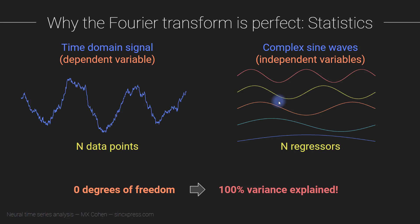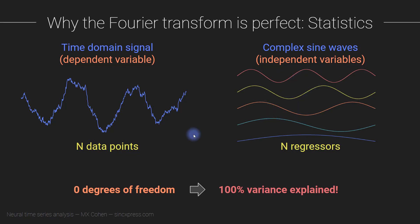All of the variance is accounted for by the set of independent variables. Now, from a statistics perspective, a statistician would tell you that this is a terrible model — a statistical model shouldn't have 0 degrees of freedom or explain 100% of the variance. But the goal here is not to have a compact, minimal representation. The goal is to have a complete, perfect representation. So it actually makes sense to have a set of basis functions that account for 100% of the variance in the signal. This is one analogy for thinking about why the Fourier transform is a lossless operation.